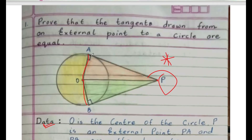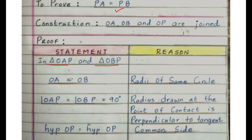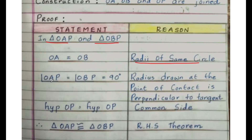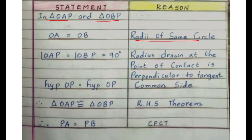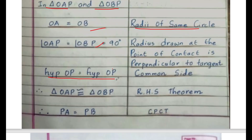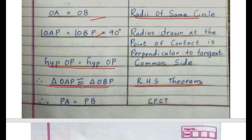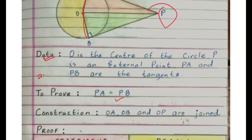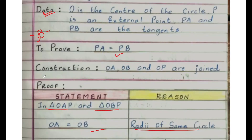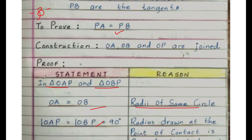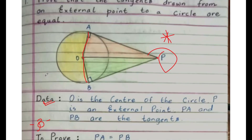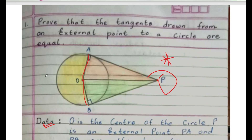In triangle OAP and triangle OBP: OA equals OB because they are radii of the same circle; angle OAP equals 90 degrees because the radius drawn at the point of contact is perpendicular to the tangent; and OP is a common side — it is the hypotenuse. By RHS theorem, triangle OAP is congruent to triangle OBP. Therefore, the tangent PA equals PB. If you write this much, you get 3 marks — an important and definite 3-mark theorem for your exam.